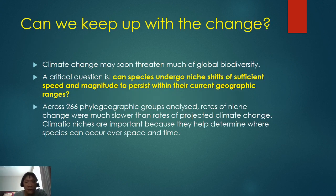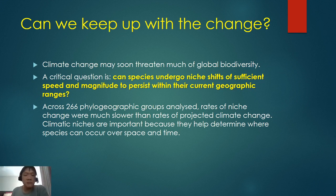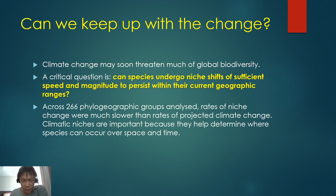How can we keep up with the change? Climate change is going to threaten the entire globe's biodiversity. We need to understand the critical question: can species undergo niche shifts of sufficient speed and magnitude to persevere? In terms of how it's going to affect organisms, especially regarding niche shifting, we need to understand the speed and magnitude of change and whether they can adapt or not. Research done on 266 species or groups identified that their adaptability is much slower than what the rate of climate change allows. It means they are not able to keep up. So we are actually not very optimistic about how the whole thing is at this point in time.